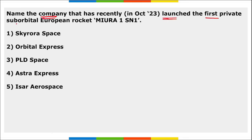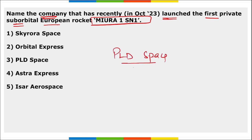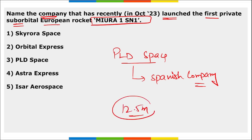PLD Space, a Spanish company, recently launched the first private suborbital European rocket — Miura 1 SN1. This rocket is 12.5 metres in length. The first flight aims to collect data about the flight performance of the rocket and its systems — right option is option 3.